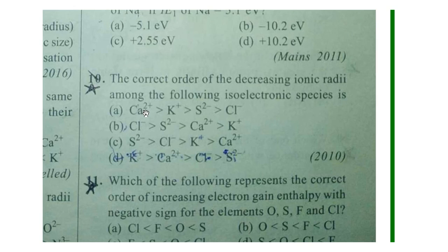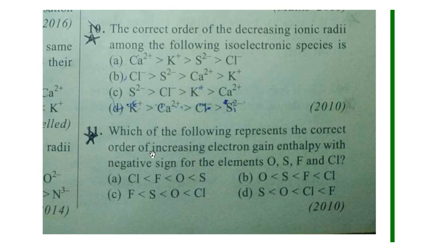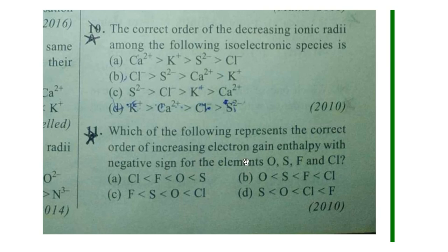Question 11: Which of the following represents the correct order of increasing electron gain enthalpy with negative sign? You have to check size and isoelectronic charge. The answer is option B. We know that electron gain enthalpy of Chlorine is more than Fluorine, so by seeing that alone we can eliminate options and confirm the answer.